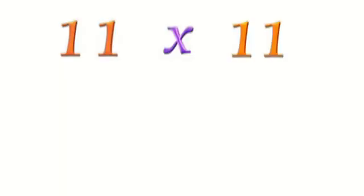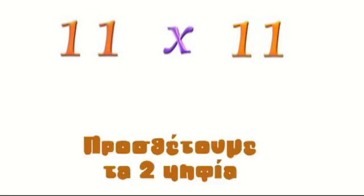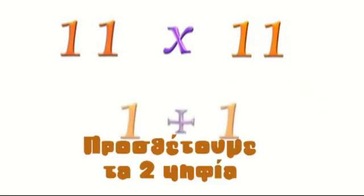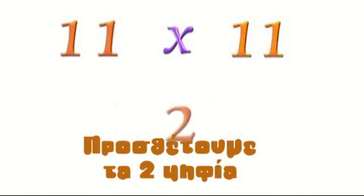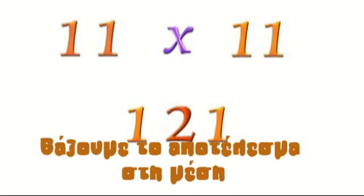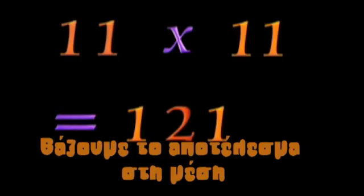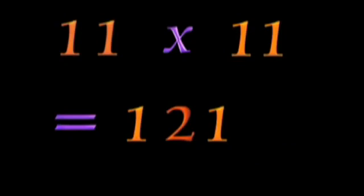Let's try 11 times 11. Look at the two digits of the number you're multiplying your 11 by, which for 11 are a 1 and a 1. Add the two digits, which is 1 plus 1, or 2. Put the 2 in the middle of the two digits of 11, and you get 121. 11 times 11 is 121.